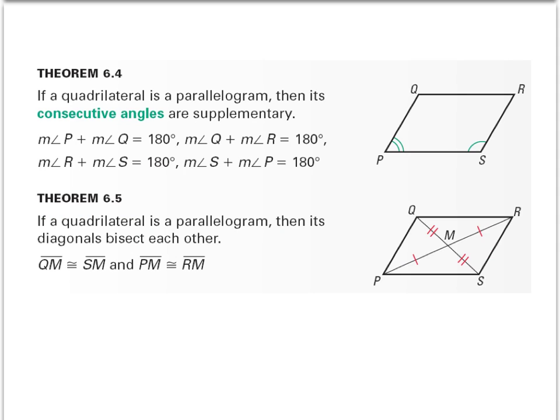Theorem 6.4 states that if a quadrilateral is a parallelogram, then its consecutive angles are supplementary. So we know that the measure of P and the measure of Q have to be 180. The measure of P and the measure of S need to be 180. The measure of S and R need to be 180. So consecutive just means the one that they're next to.